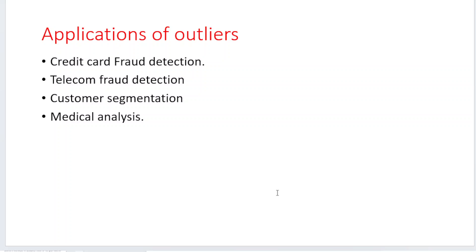In telecom fraud detection, we have many calling records and some will be anonymous calls. Normal calls last around 5, 10, or 15 minutes, but there are a few people who speak for a much longer time. Such call records are analyzed, and those anomalous patterns are considered as telecom fraud.